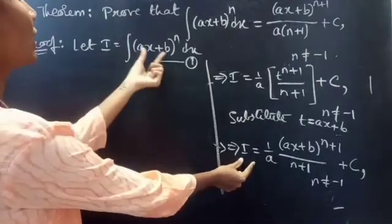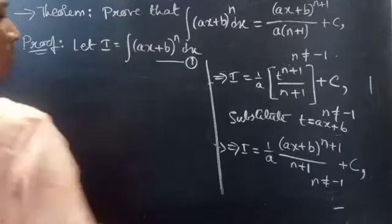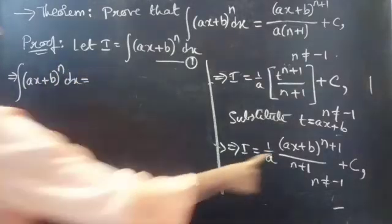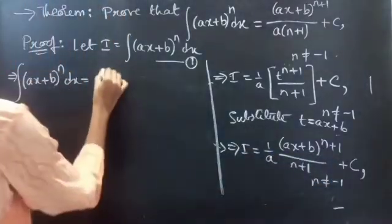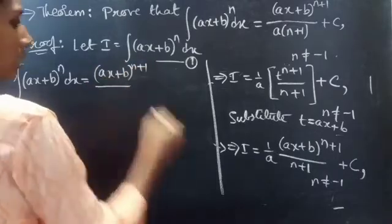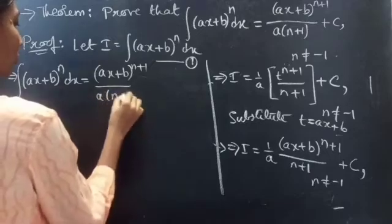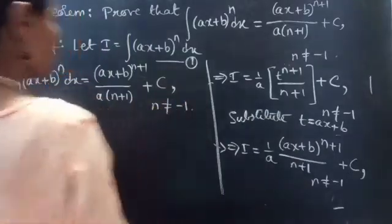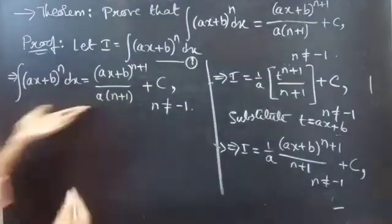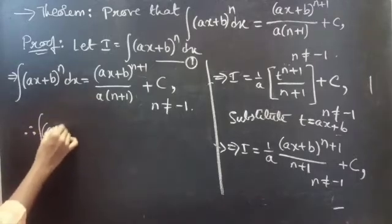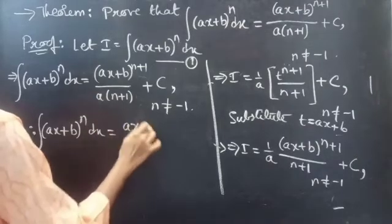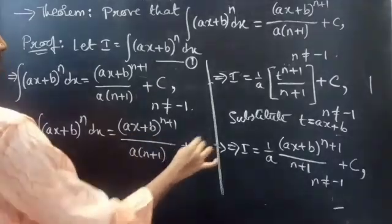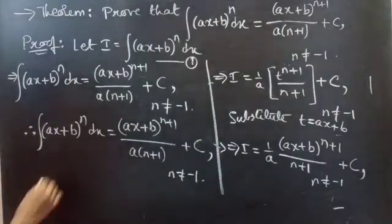Since I equals the integral of (Ax + b)^n dx, replacing I we get: the integral of (Ax + b)^n dx equals (Ax + b)^(n+1) divided by A(n+1), plus C for n not equal to minus 1. Hence proved.